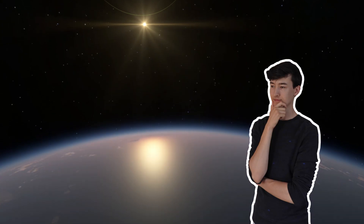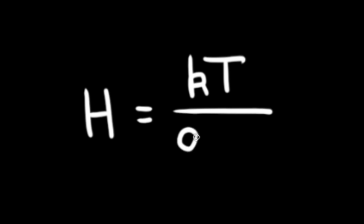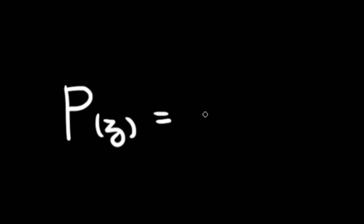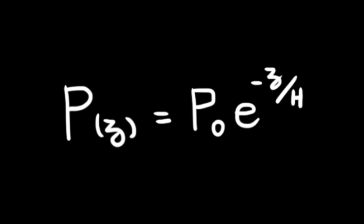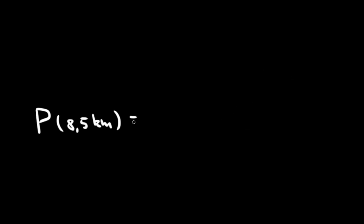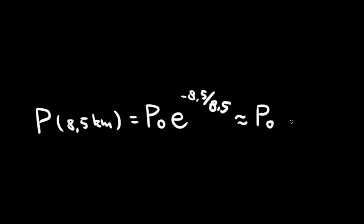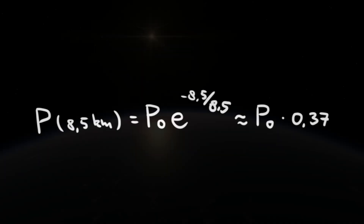So how might we do this? We are going to use something called the scale height. This is an indicator of how thick an atmosphere is — it is the distance where the density or pressure of an atmosphere decreases by a factor of e. P(z) is the pressure at a certain altitude z, P0 is the pressure at sea level, and H is the scale height which depends on the planet. For example, Earth has a scale height of 8.5 kilometers, meaning that the pressure will have dropped by about 63% at an altitude of 8.5 kilometers.